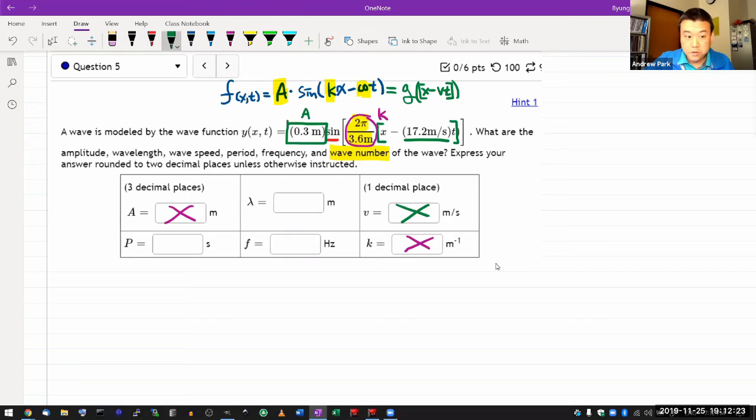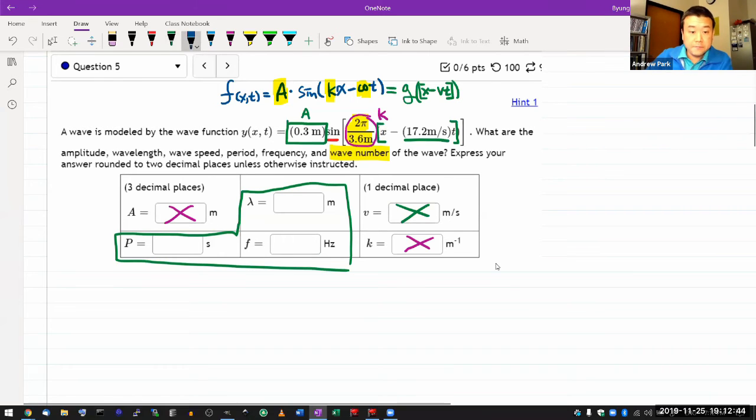Now once you have these three numbers, amplitude, wave speed, wave number, then the rest here can be calculated through their relationship to these three parameters. And this is where good memory helps because you have a bunch of different relationships to juggle.